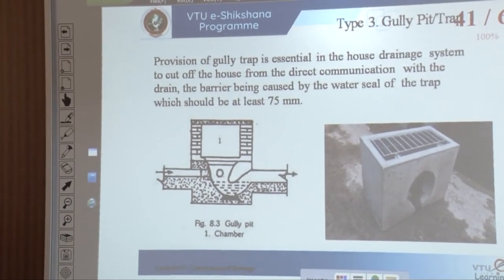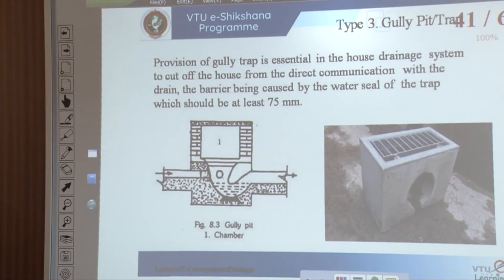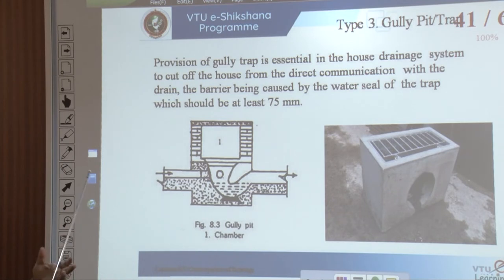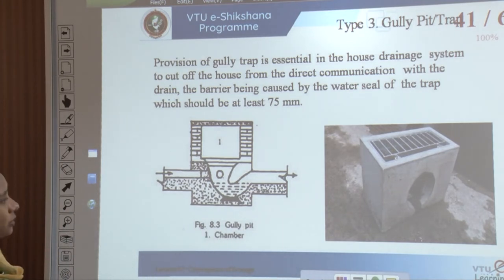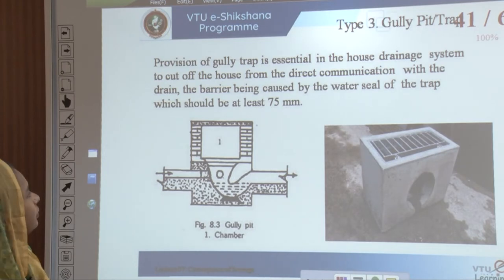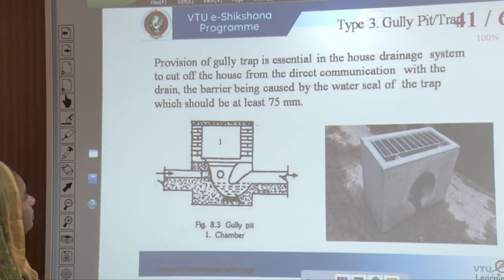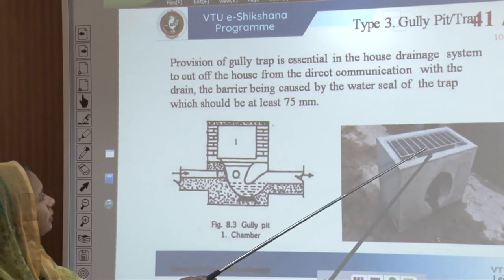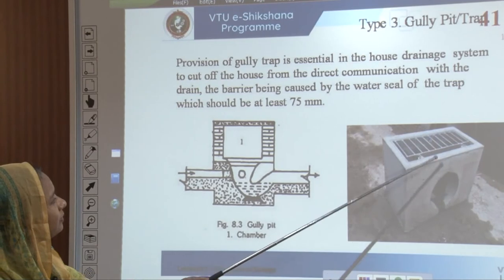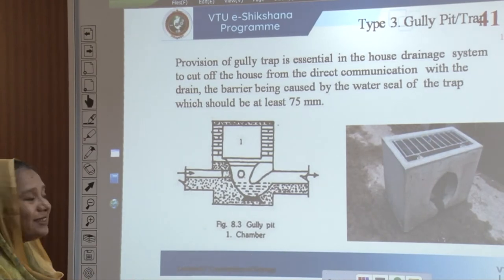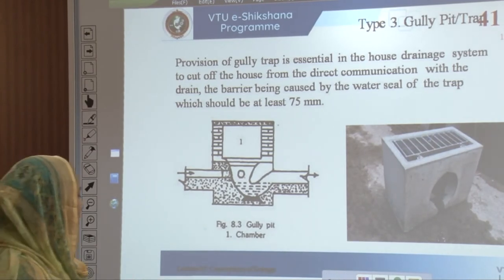The gully pit or gully trap is the most essential part of any house drainage system. It cuts off the house from its direct connection with the sewer system, and the barrier is caused by the water seal of this trap which is at least 75 mm.